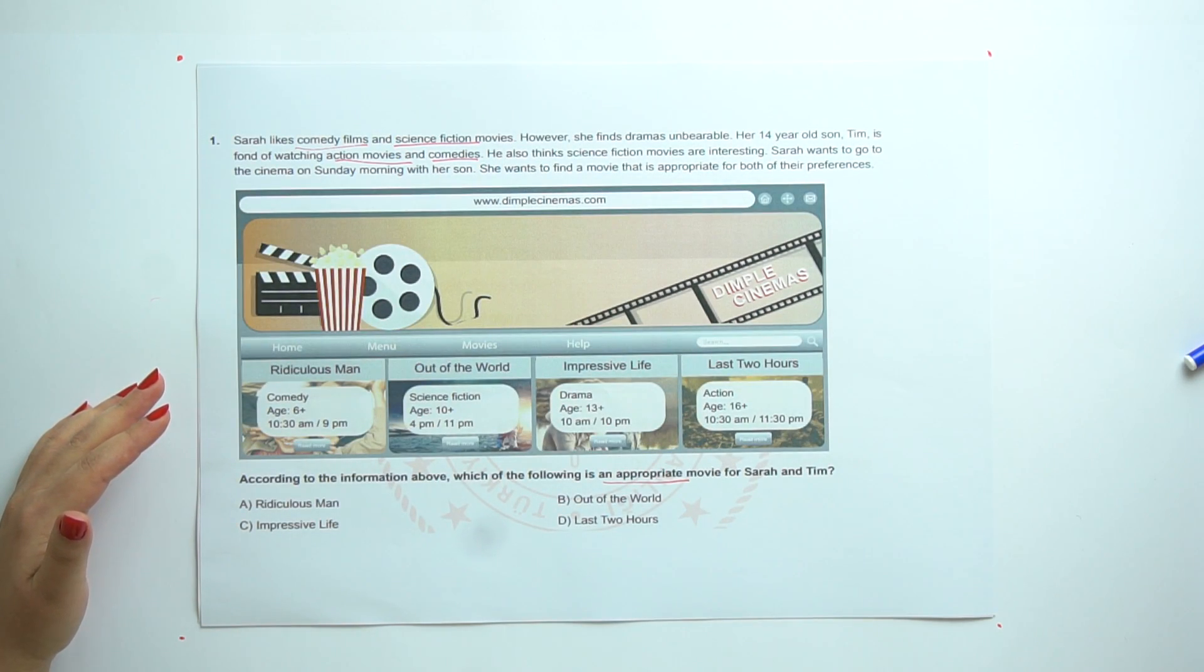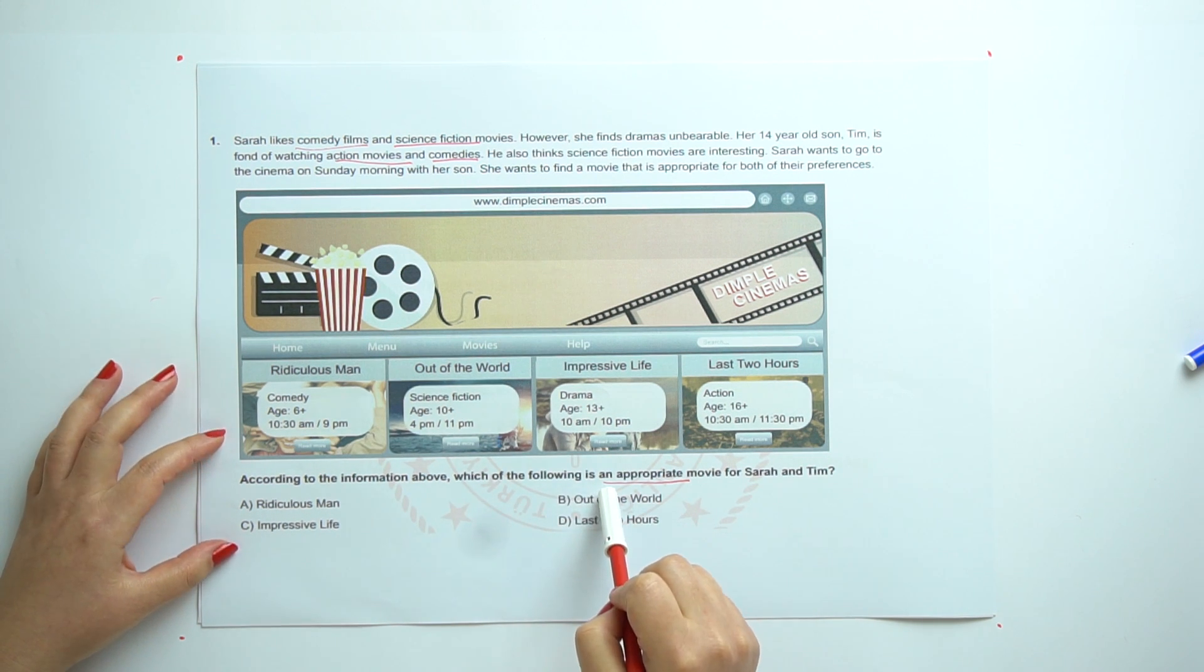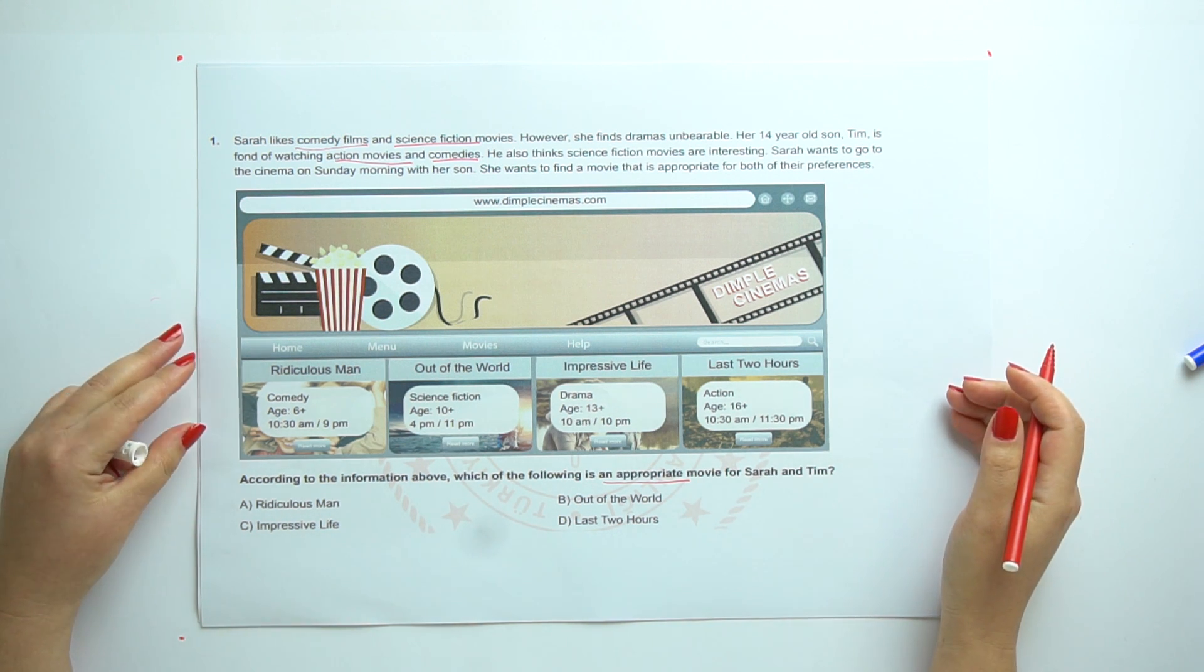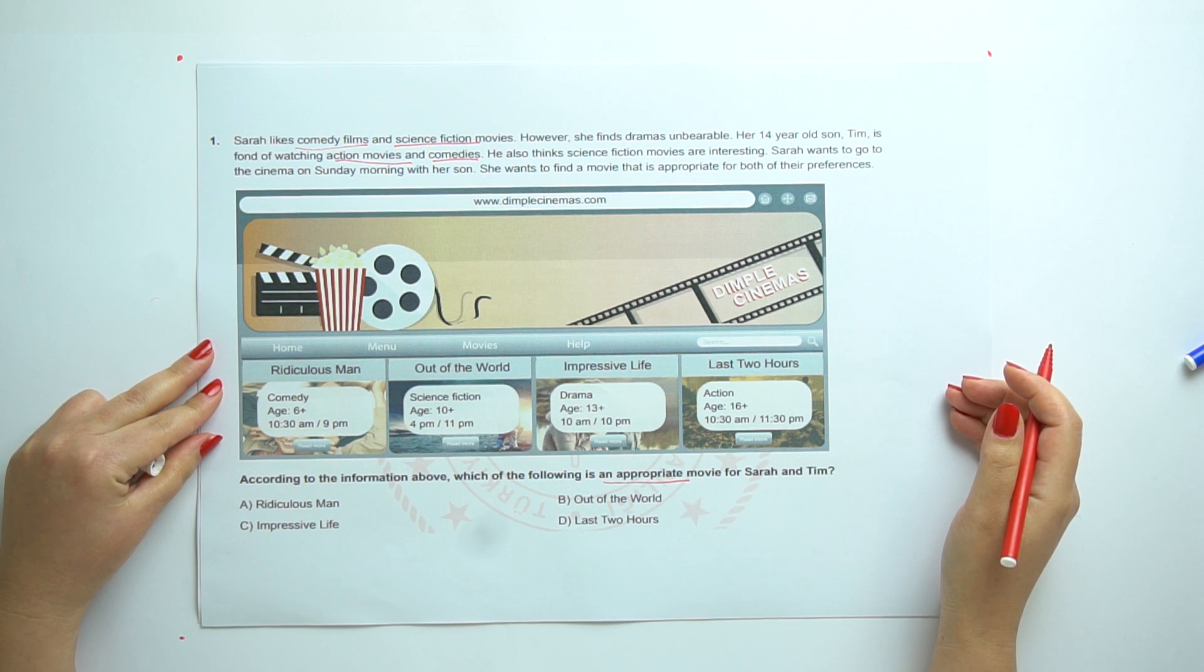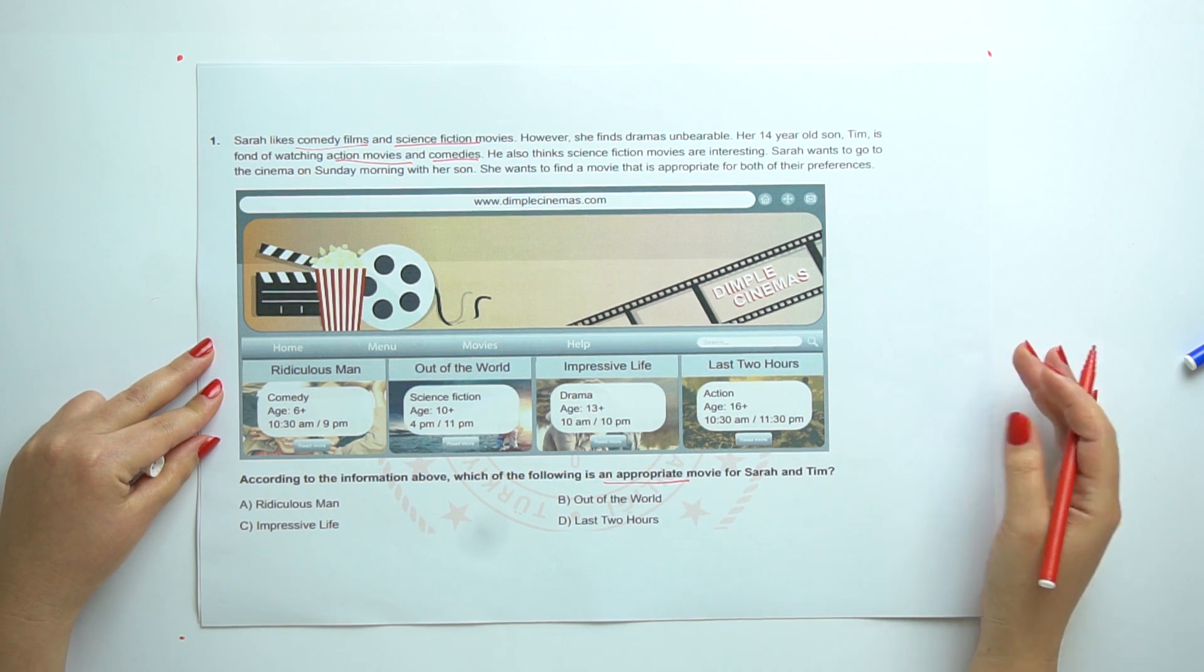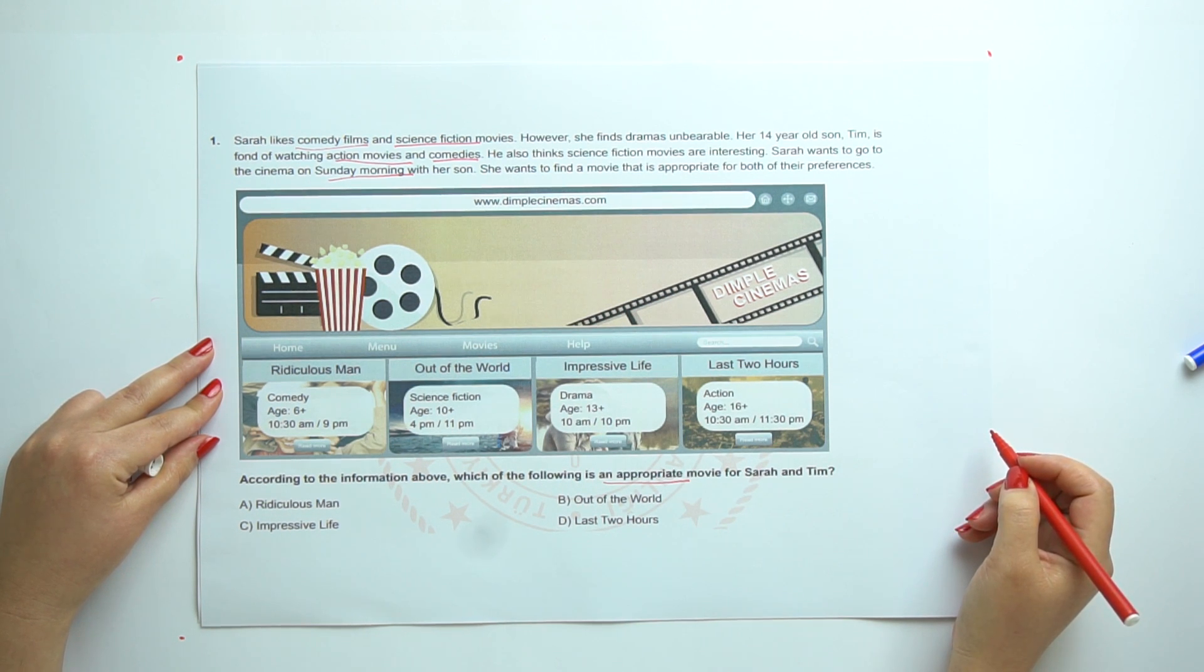Let's start question 1. According to the information above, which of the following is an appropriate movie for Sarah and Tim? Sarah likes comedy films and science fiction movies. However, she finds dramas unbearable. Her 40-year-old son, Tim, is fond of watching action movies and comedies. He also thinks science fiction movies are interesting. Sarah wants to go to the cinema on Sunday morning with her son. She wants to find a movie that is appropriate for both of their preferences.